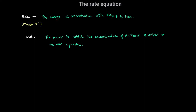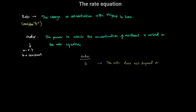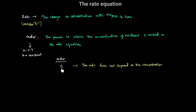When we say something is order zero with respect to a particular reactant, we mean that the rate of the reaction does not depend on the concentration of that reactant — the concentration of that reactant does not affect the rate of the reaction.